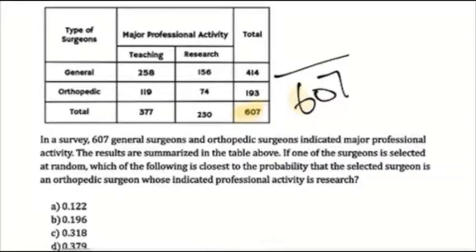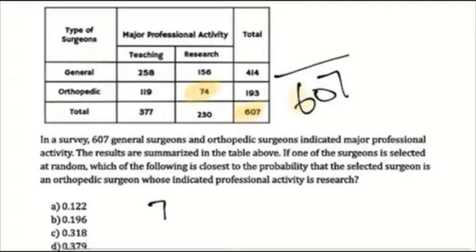The question is: which of the following is closest to the probability that the selected surgeon is an orthopedic surgeon whose indicated professional activity is research? We need the probability that we choose somebody who is an orthopedic surgeon interested in research. Orthopedic surgeons interested in research are these 74 people. In a calculator, we're going to divide 74 by 607. The answer will be 0.122.